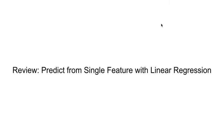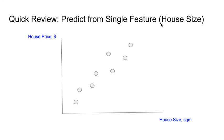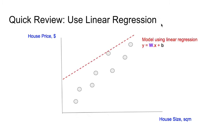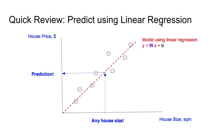Previously, we tried to predict the outcome from a single feature with linear regression. So we have some data points and we tried to predict the house price given a house size. To do so, we model our data using linear regression, and then we use machine learning to find the best fit. With the best fit, given any house size, even though we do not have the data points, we can give a good prediction for the house price.